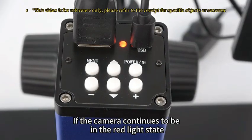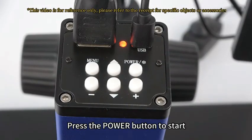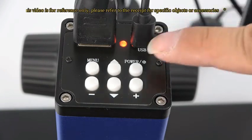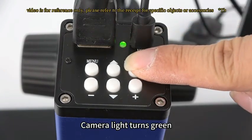If the camera continues to be in the red light state, press the power button to start. Camera light turns green.